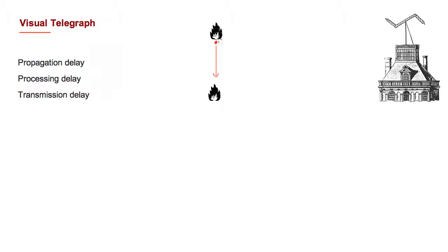First, we would have to light a fire, then the message would have to travel between the two points, and then finally we have to detect that a message is being transmitted. So let's start from the beginning. First we have to light the fire, and that is our transmission delay. So that happens right there.